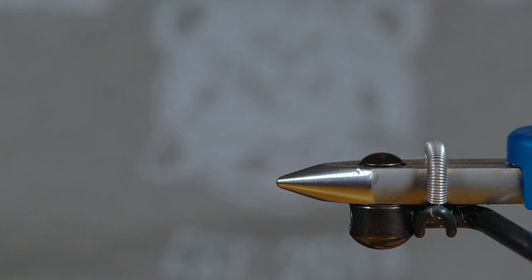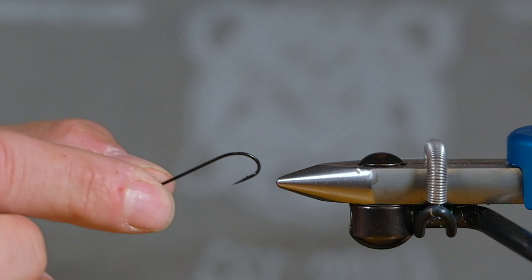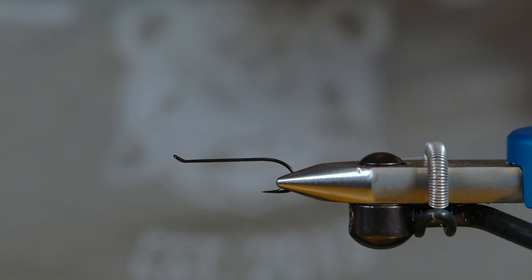So today we're going to be tying our Nimbus on a number six Partridge end two. This is the low water hook and I'm just using UTC 70 in a black to start.